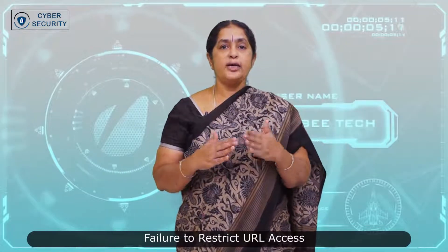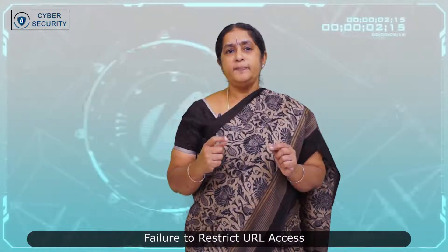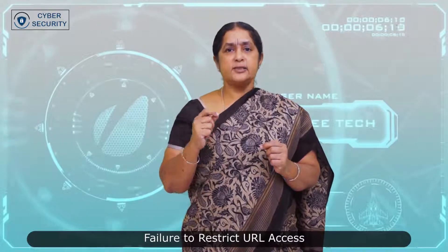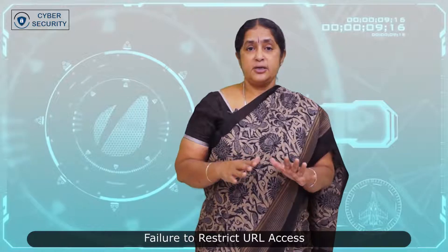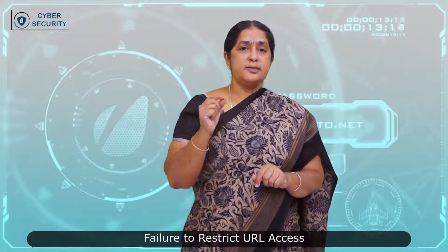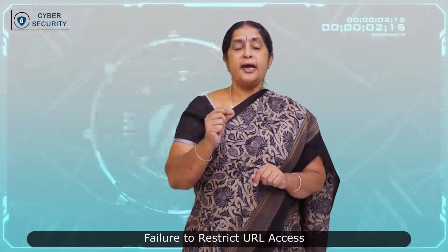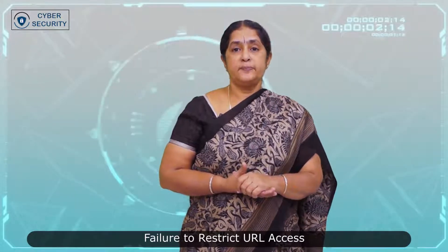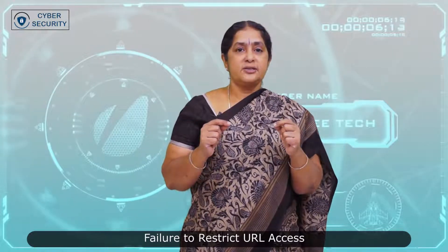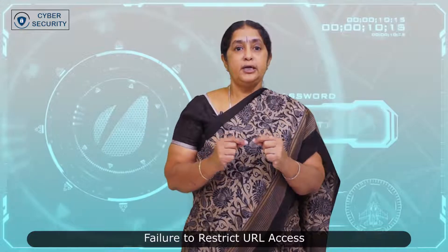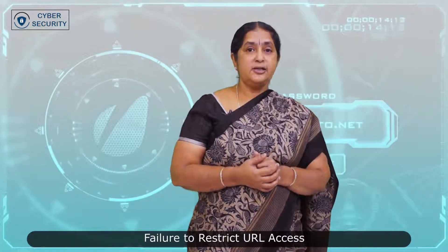Next, failure to restrict URL access. Web applications often check URL access rights before rendering protected links and buttons. Similarly, applications need to check for access control whenever web pages are accessed. In most applications, special rights to pages, locations, and resources are not made available to unprivileged users. These are known as access control mechanisms. An attacker by intelligent guessing can access privileged pages and view confidential information.